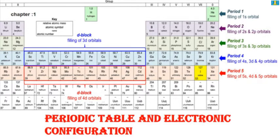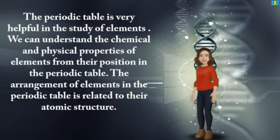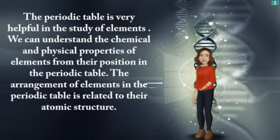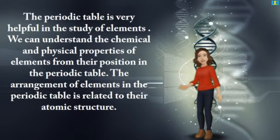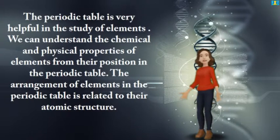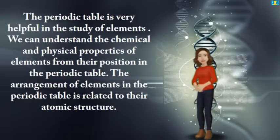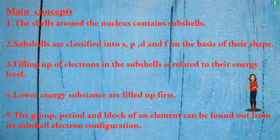Hello students, today let us learn an important chapter: periodic table and electronic configuration. The periodic table is very helpful in the study of elements. We can understand the chemical and physical properties of elements from their position in the periodic table. The arrangement of elements in the periodic table is related to their atomic structure.